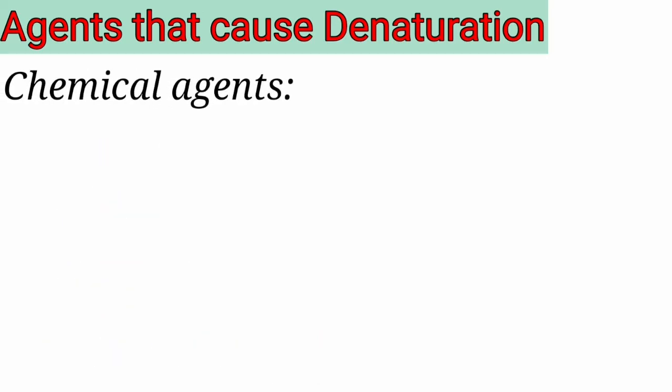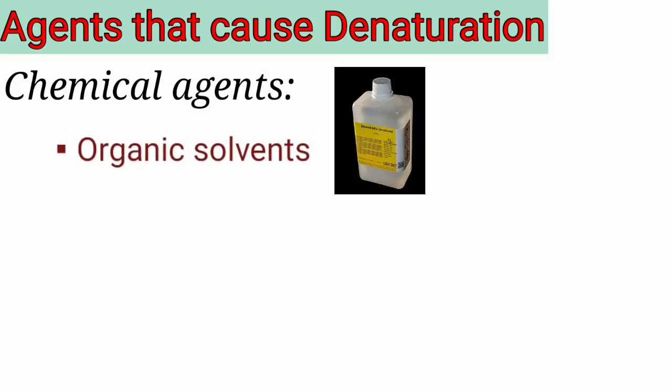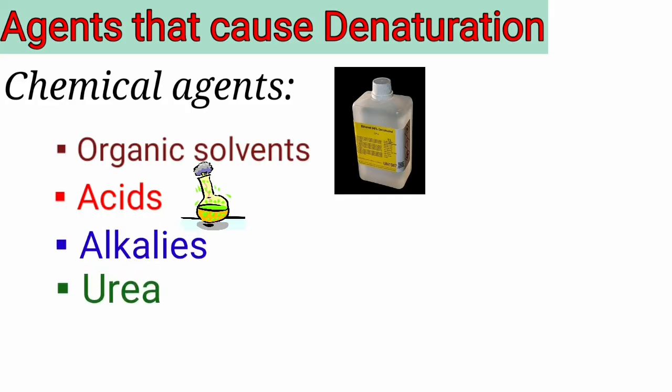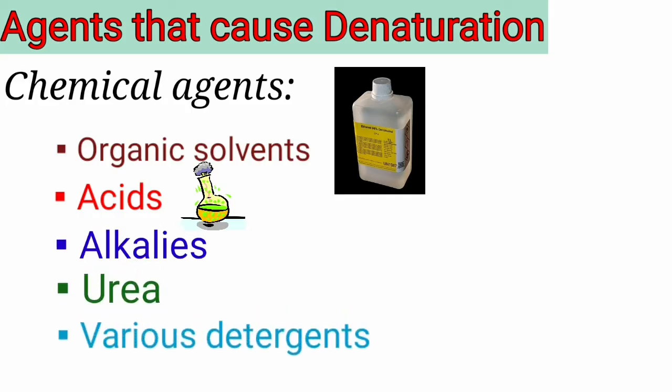Coming to chemical agents responsible for denaturation, it includes organic solvents like ether and alcohol, acids, alkalis, urea, and various detergents — for example, sodium dodecyl sulfate.